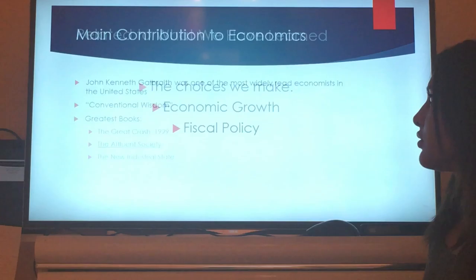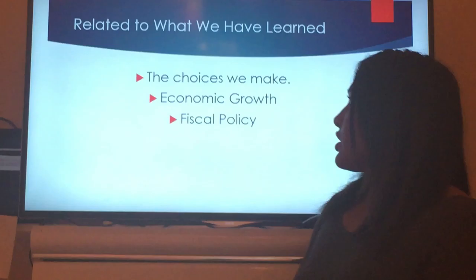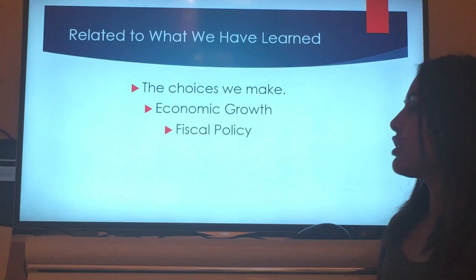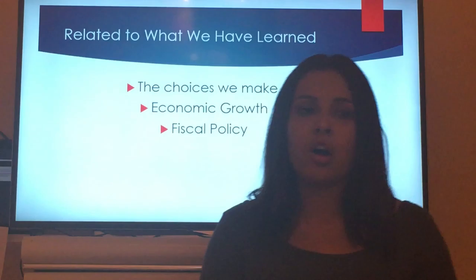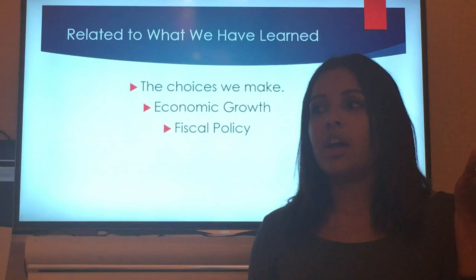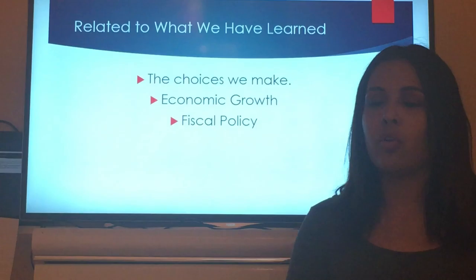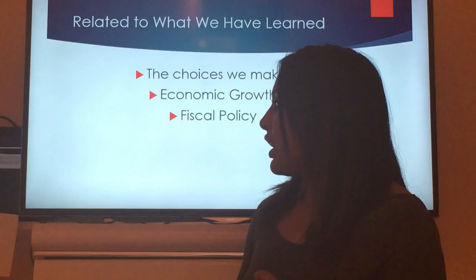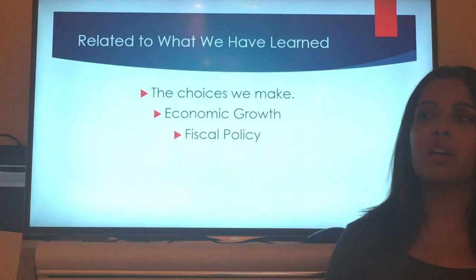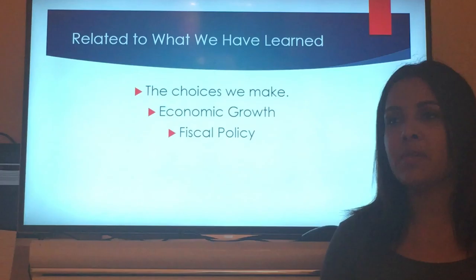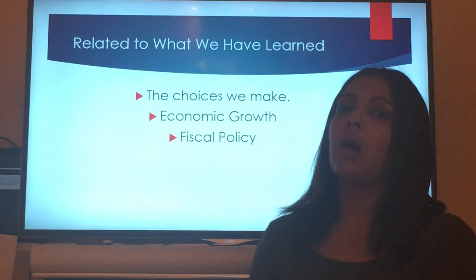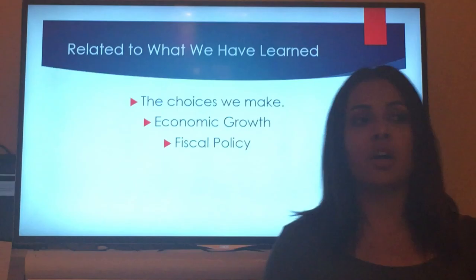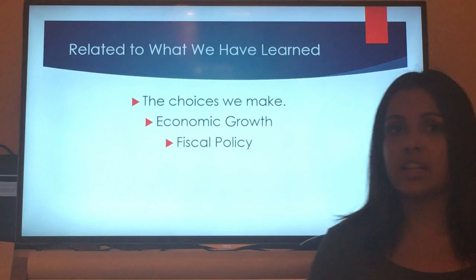Relating this to what we've learned in class: one of the biggest concepts is the choices we make. When making economic decisions, you need to weigh your options — what do you need versus what do you want — because often what you want you can't afford, and then you can't get what you need. Galbraith developed the theory of the firm, which states that society needs to benefit economically as a whole, not just according to one person. An economic decision that benefits the rich but not the poor is not a good one — it needs to benefit everyone.